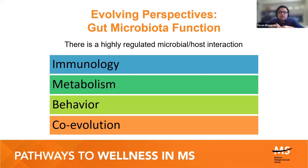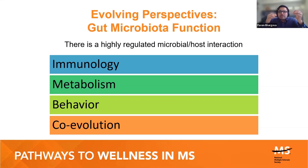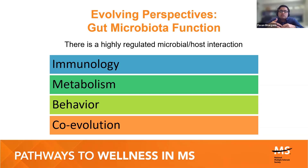What has evolved over time is our understanding that these bacteria aren't just there for no reason. We now know there's a highly regulated interaction between these microorganisms in your gut and our body. These interactions are important for the immune system, for how things are metabolized in our body, and even for behavior. It does look like bacteria and humans have co-evolved in their interactions at the level of the gut microbiota.